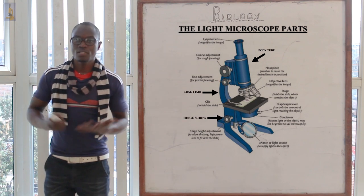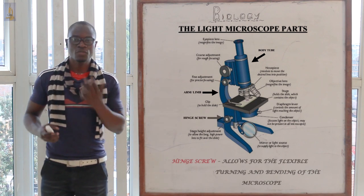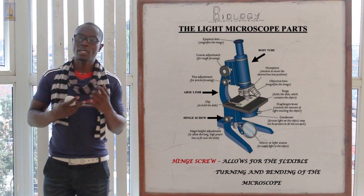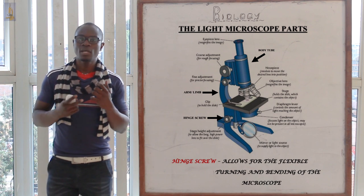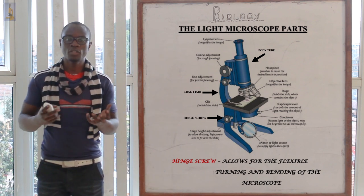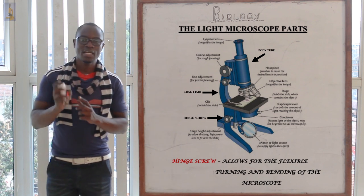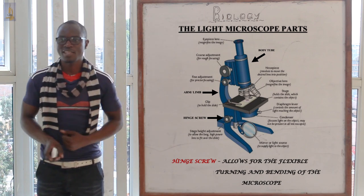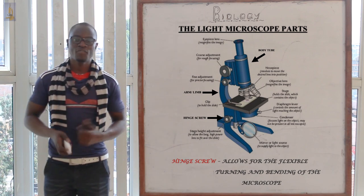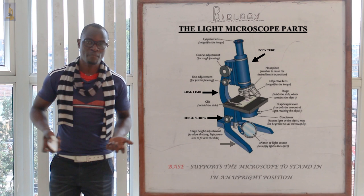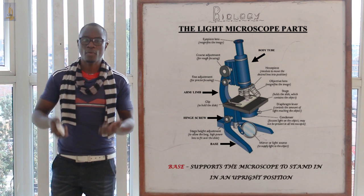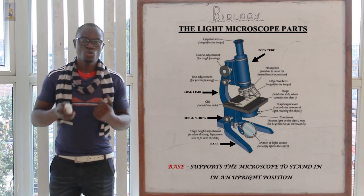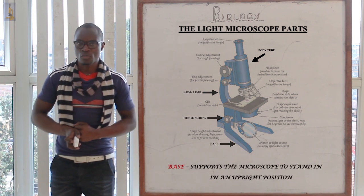The hinge screw is located between the arm and the base, and its function is to allow the bending of the microscope. Finally, the base supports the entire microscope.